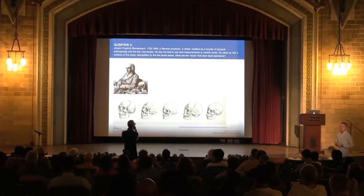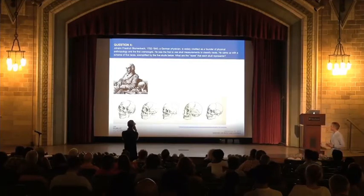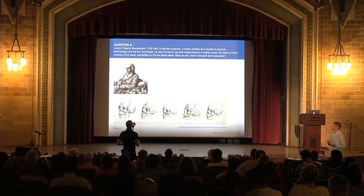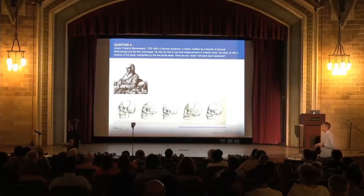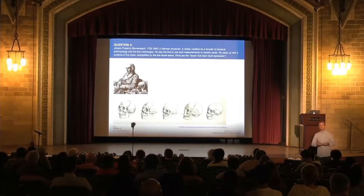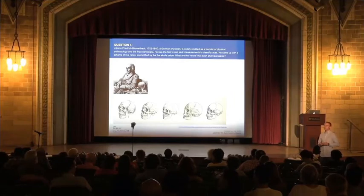Question four. Johann Friedrich Blumenbach was a German physician who lived between 1752 and 1840. He is widely credited as the founder of physical anthropology and the first craniologist — the first person to study skulls. He was the first to use skull measurements to classify the races. He came up with a scheme of five races exemplified by the five skulls you see below here and by the divisions of the Morton collection presented at the foot of the stage. What are the races that each of these crania represent — the five platonic types of human represented in this early attempt at racial classification and natural history?